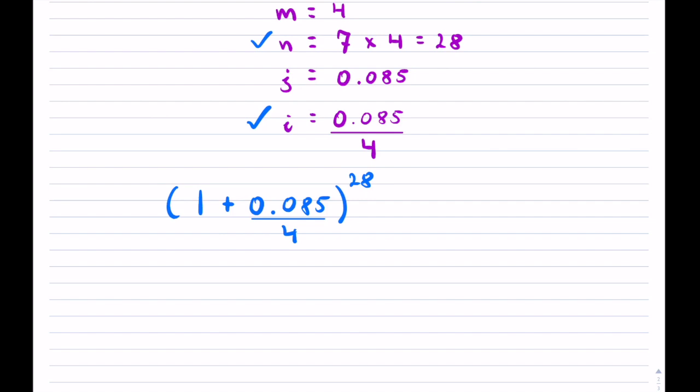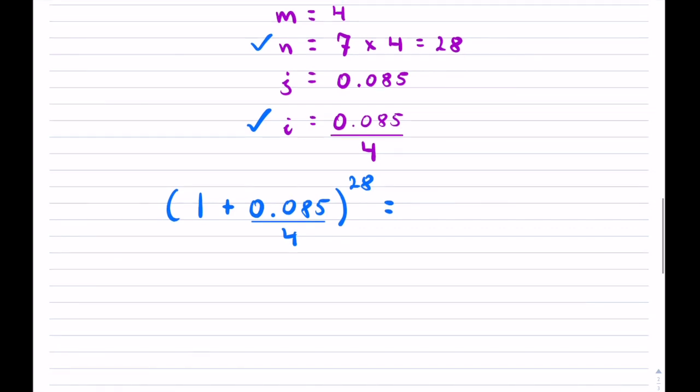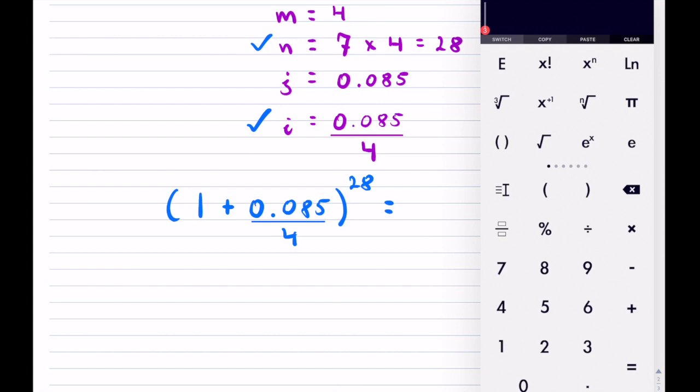Now, we can find out what the answer to this is. You can take out your calculator and plug it all in if you like. So let me do that. I'll have 1 plus 0.085 divided by 4. And then we have to hit to the exponent of 28.